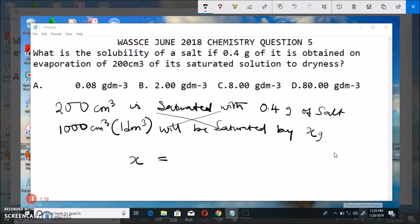we are going to have that 1000 times 0.4 all over 200, and this will give us 2.00 gram per dm³.